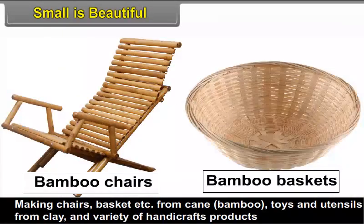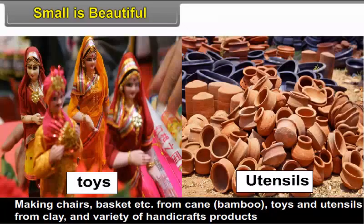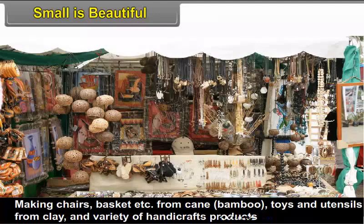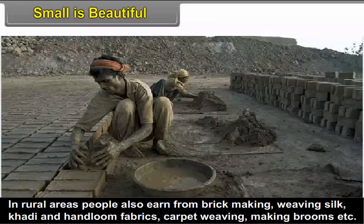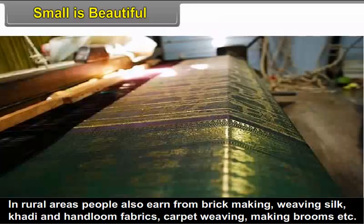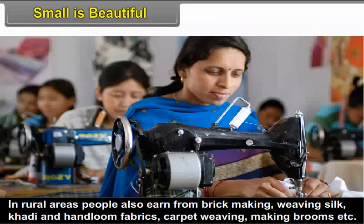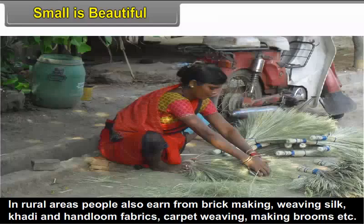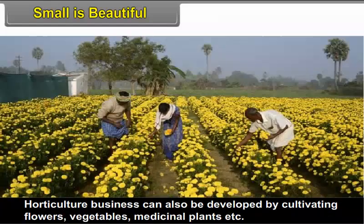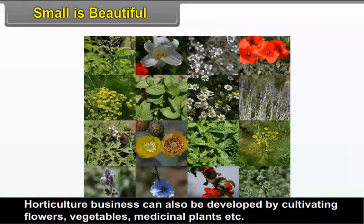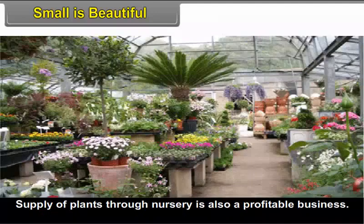Making chairs, baskets, etc. from cane, i.e. bamboo, toys and utensils from clay, and a variety of handicraft products are most popular cottage industries. In rural areas, people also earn from brick making, weaving silk, khadi and handloom fabrics, carpet weaving, making brooms, etc. Horticulture business can also be developed by cultivating flowers, vegetables, medicinal plants, etc. Supply of plants through nursery is also a profitable business.